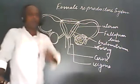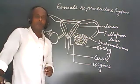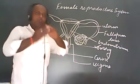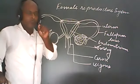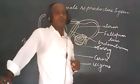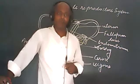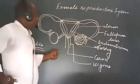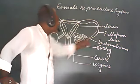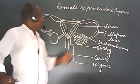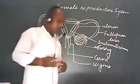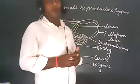The ampulla is the place in the fallopian tube where the ovum is fertilized with the sperm. In simple terms, fertilization occurs in the fallopian tubes of the female reproductive organ, because when the ovum reaches there, the sperms also reach that place.